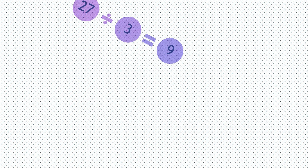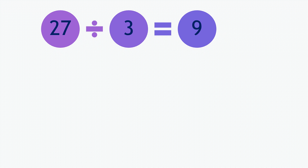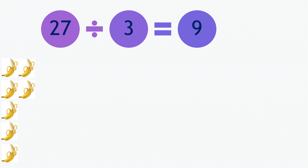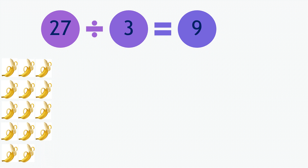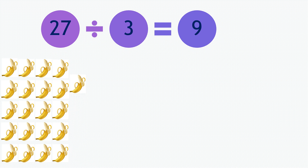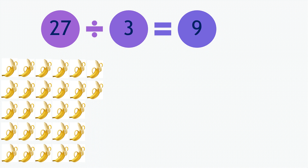Moving on to our next question. 27 divided by 3 equals 9. So if you have 27 bananas — 1, 2, 3, 4, 5, 6, 7, 8, 9, 10, 11, 12, 13, 14, 15, 16, 17, 18, 19, 20, 21, 22, 23, 24, 25, 26, 27.